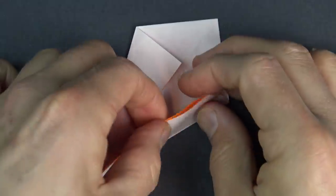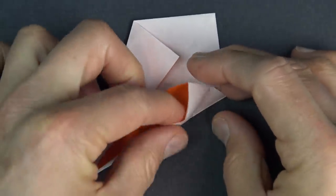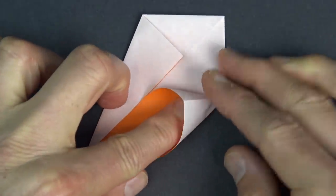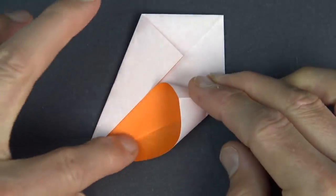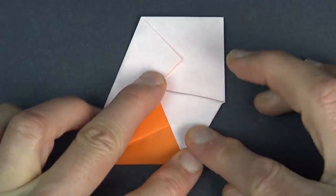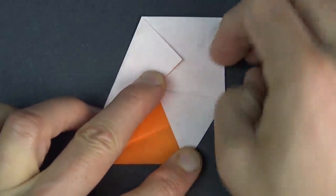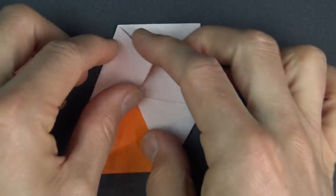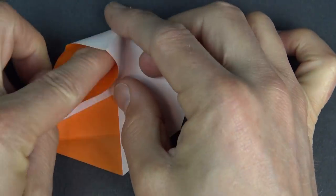Now open this pocket, put your finger inside and squash it so that this crease lands on this edge and flatten. And repeat on this side and flatten, and repeat on this side.